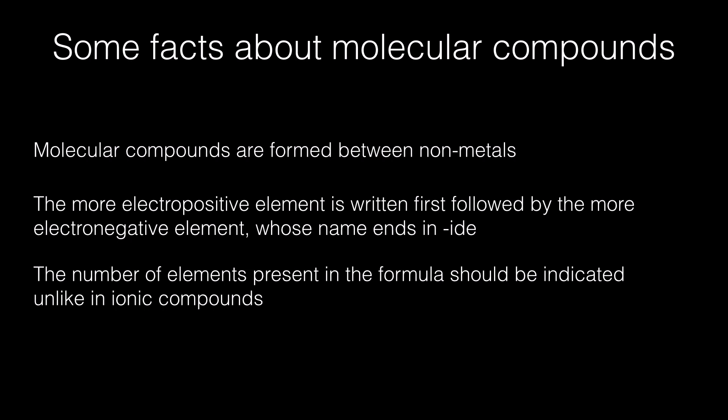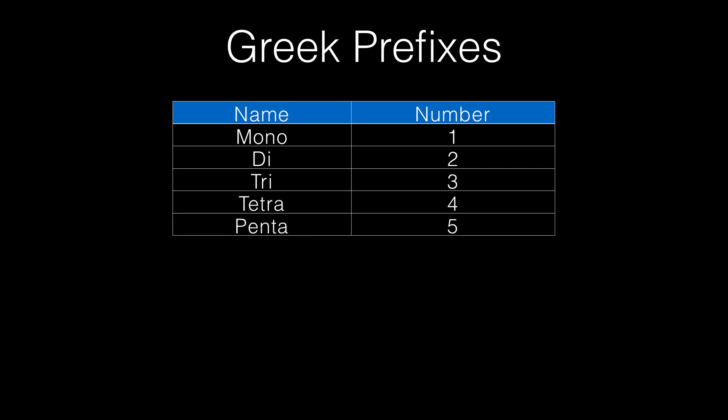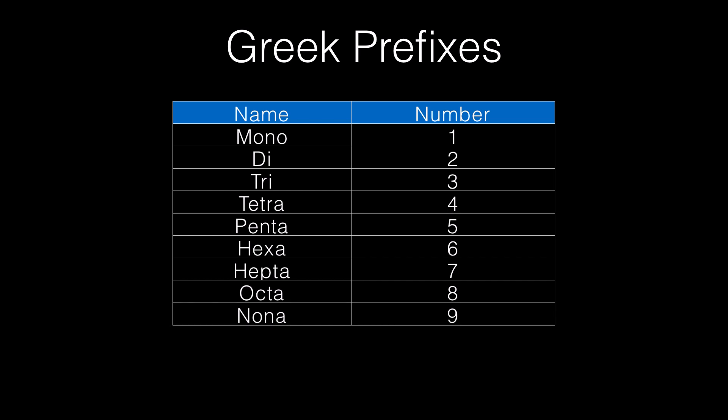The Greek prefixes that we use to indicate the number of atoms is given next. It would be a good idea to learn these prefixes as they come in handy for naming not only molecular compounds but also organic compounds later. If you have a single element it's called mono, if there are two elements of a kind we say it's di, if we have three elements we have tri, four would be tetra, five would be penta, six would be hexa, seven would be hepta, eight would be octa, nine would be nona, and ten would be deca.